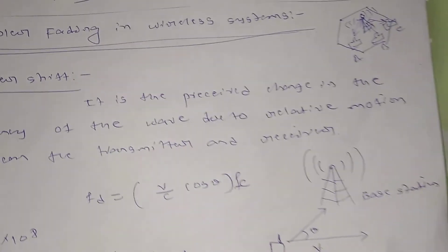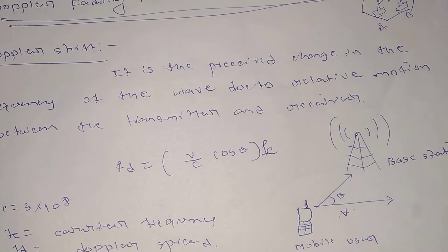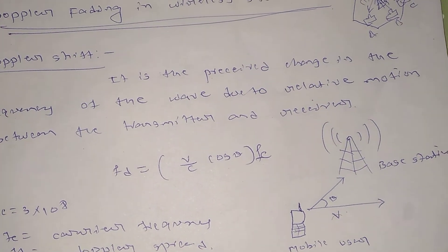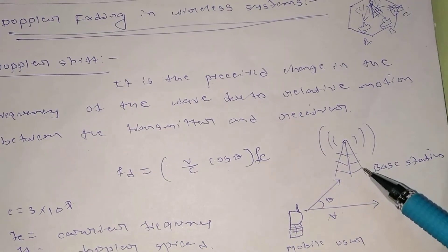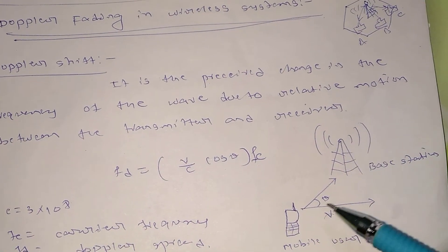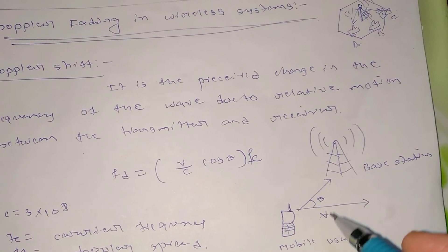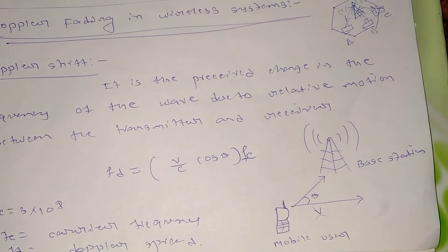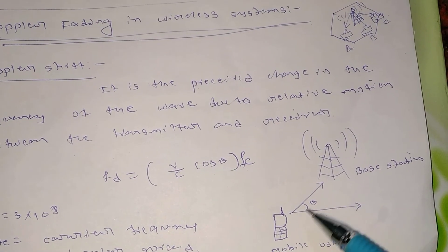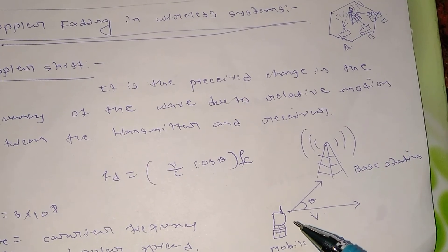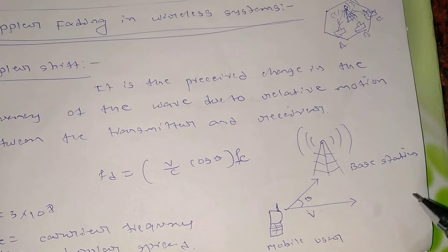Now let us see a particular terminology which is popularly used in Doppler fading, that is Doppler shift, denoted as fd. You can see I am drawing here the base station and a mobile, and this is traveling in the forward direction with a velocity v, and it is making an angle of theta for the receiving angle, the inclination between the received path.